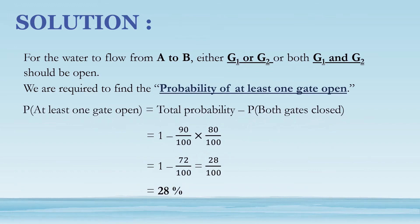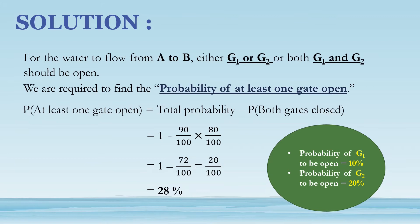Probability of at least one gate open equals total probability minus probability of both gates closed. We know that probability of G1 to be open is 10% whereas that of G2 to be open is 20%. This means that probability of G1 to be closed is 90% whereas that of G2 to be closed is 80%.